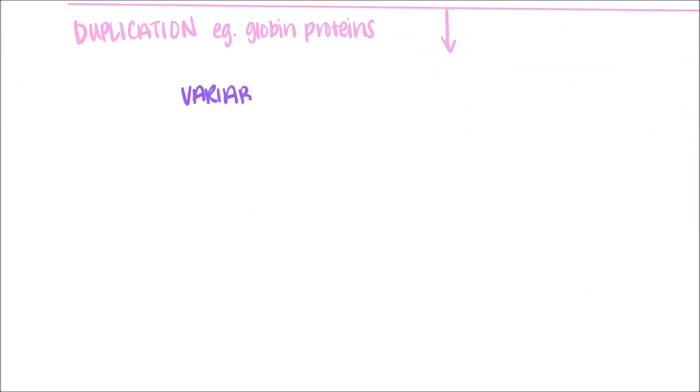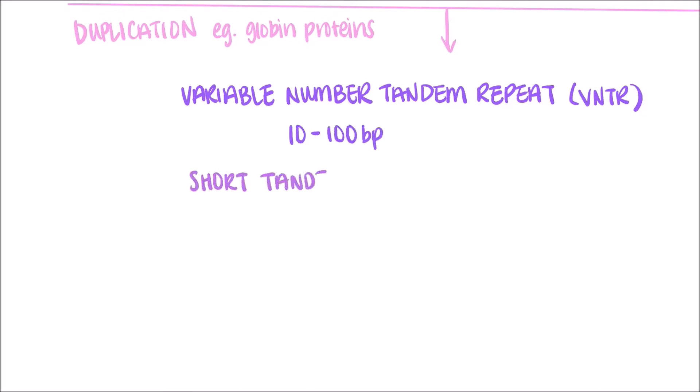Duplication can result in regions called variable number tandem repeats, or VNTRs. These are repeats that are side by side, ranging from 10 to 100 base pairs. You might have also heard of short tandem repeats, or STRs. They are also known as microsatellites. The difference between VNTRs and STRs is the length of region repeated. STRs refers to repeats of only a few nucleotides, generally described as 2 to 7 base pairs.